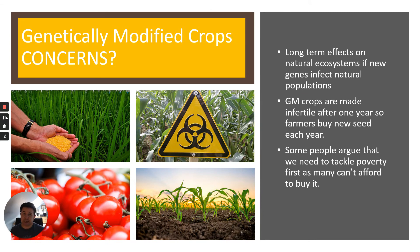However, with new technology there are concerns. Genetically modified crops are currently not grown in fields in this country — they can only be grown in a greenhouse — whereas other countries do grow GM crops in the field. The three main concerns are: the long-term effects on natural ecosystems are not fully understood, particularly whether the artificial gene might affect natural populations; GM crops are made infertile, meaning farmers must buy new seed from the same company each year; and some people argue that we need to tackle poverty first, as many cannot afford to buy this new technology.